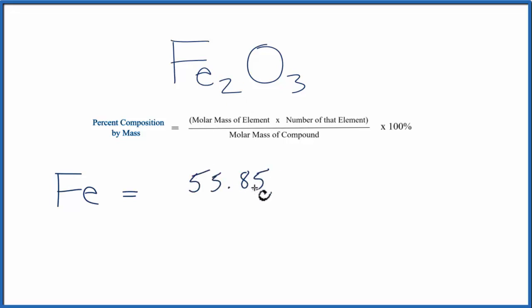I won't write those here because they are going to cancel out for us. And the number of that element, we have 2. So let's multiply that by 2, and I'll put it in parentheses to keep things organized.